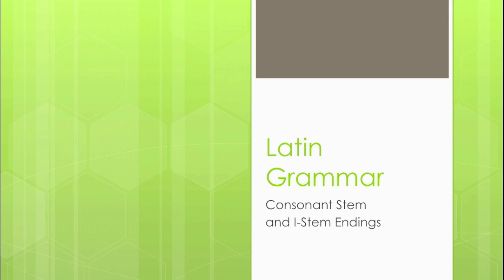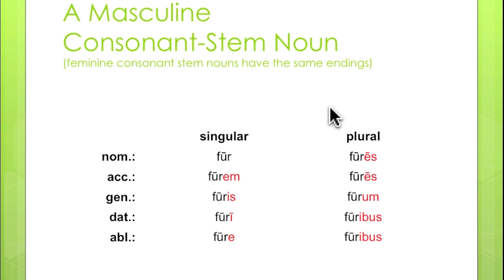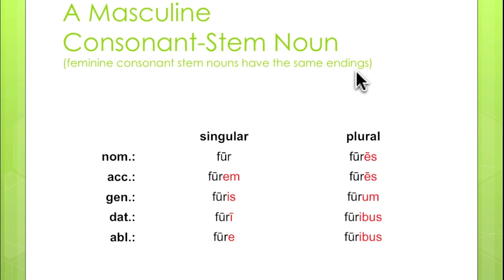In this video we are going to look at the differences between consonant-stem and i-stem endings in the third declension. Let's start by looking at a masculine consonant-stem noun. By the way, feminine consonant-stem nouns have the exact same endings as masculine consonant-stem nouns, so the masculine noun we look at is standing in for both masculine and feminine nouns. The word we're going to look at is 'fur, furis,' masculine.